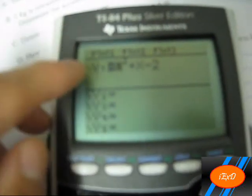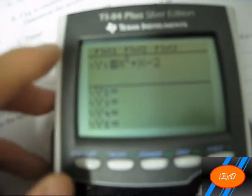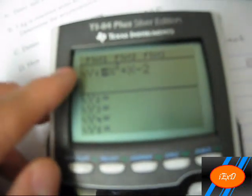Now first what we want to do is press the y equals button which is right here. And then it will show you rows of y's labeled y1, y2, y3, y4. Well those are where you enter your equation.